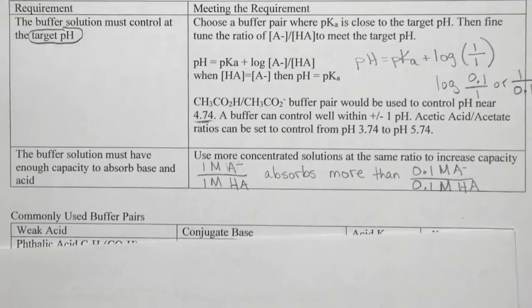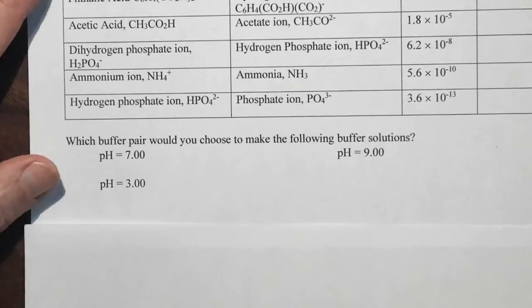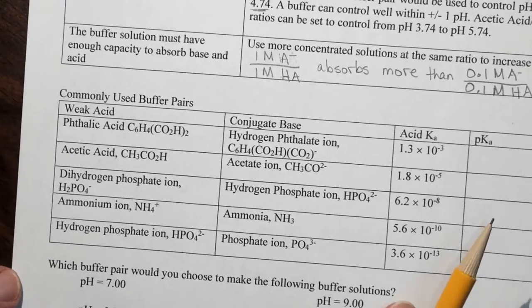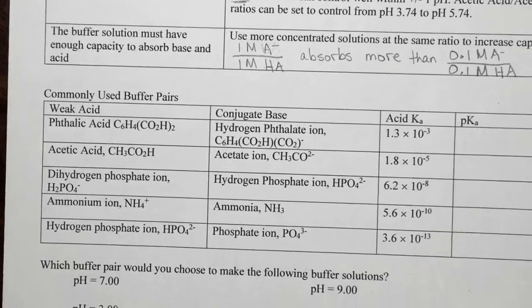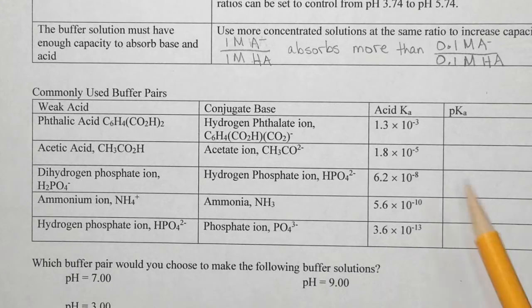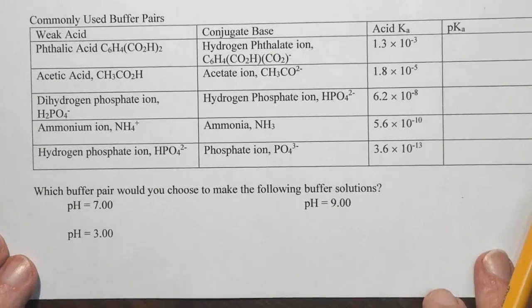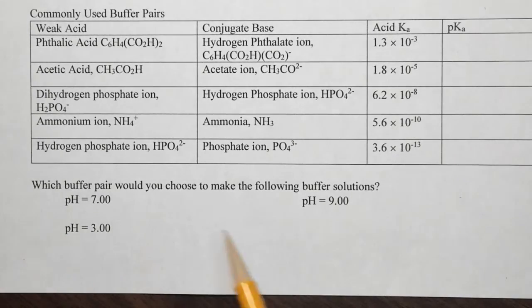So let's look at a couple of examples of doing this. We're going to look at some commonly used acid base pairs. So we've got the weak acid, the conjugate base, and the acid Ka. And then we're asked to figure out which buffer pair would you choose to make the following buffer solutions? pH of 7, pH of 3, pH of 9.